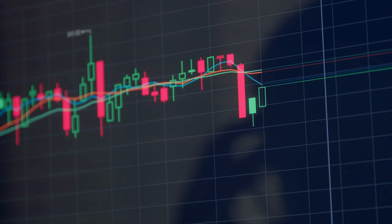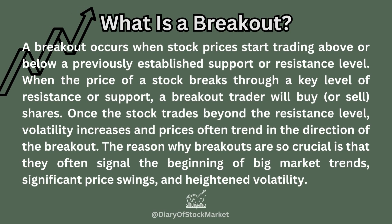A breakout occurs when stock prices start trading above or below a previously established support or resistance level. When the price of a stock breaks through a key level of resistance or support, a breakout trader will buy or sell shares. Once the stock trades beyond the resistance level, volatility increases and prices often trend in the direction of the breakout. The reason why breakouts are so crucial is that they often signal the beginning of big market trends, significant price swings, and heightened volatility.